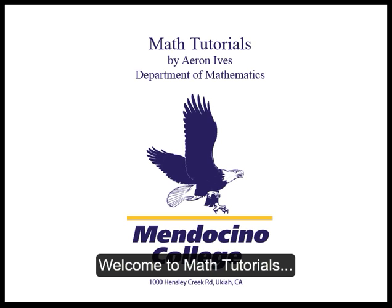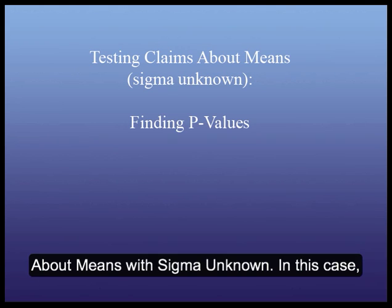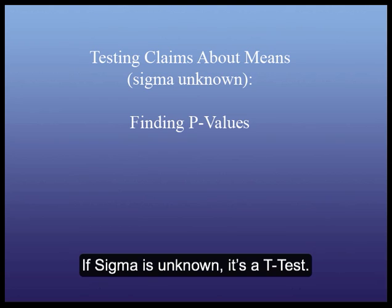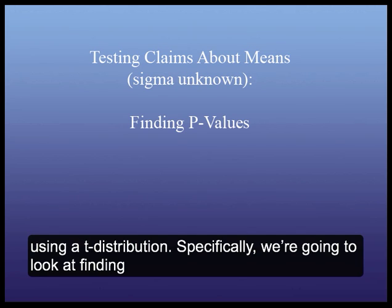Welcome to Math Tutorials. In today's lesson, we're going to take a look at testing claims about means with sigma unknown. Remember, if sigma's known, it's a z-test, and if sigma's unknown, it's a t-test. So we're talking about testing claims about means, about mu, in the situation where it's a t-test and t-distributions. Specifically,